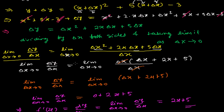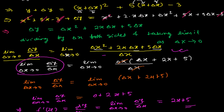Then proceed by taking the limit as Δx→0 and dividing both sides by Δx. This gives the derivative. Note: you cannot simply plug in Δx = 0 at the beginning before canceling, because the numerator and denominator would both become zero — giving 0/0, which is an indeterminate form. That's why we factor and cancel first, then substitute.